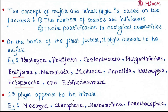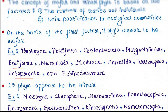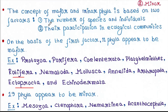On the basis of the first factor, 11 phyla appear to be major: Protozoa, Porifera, Coelenterata, Platyhelminthes, Rotifera, Nematoda, Mollusca, Annelida, Arthropoda, Ectoprocta, and Echinodermata.